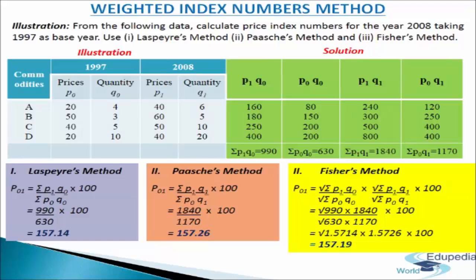We will make a table with four columns. In the first column we write P1Q0 — price of the current year multiplied by quantity of the base year: 40×4=160, 60×3=180, 50×5=250, 40×10=400. Adding up, ΣP1Q0 = 990. In the second column we write P0Q0 — price of the base year (1997) multiplied by quantity of the base year: 20×4=80, 50×3=150, 40×5=200, 20×10=200. Adding up, ΣP0Q0 = 630.